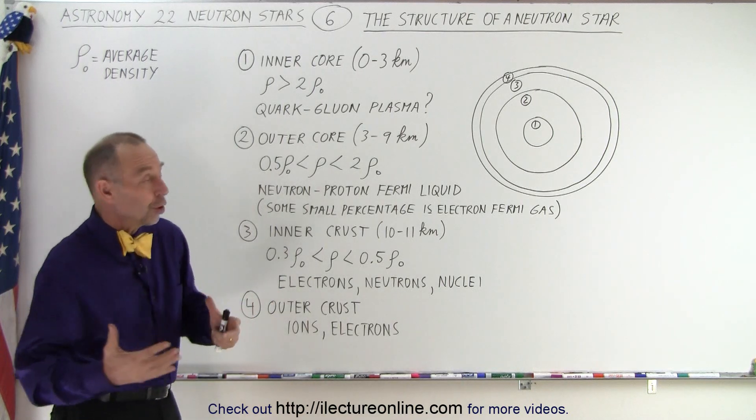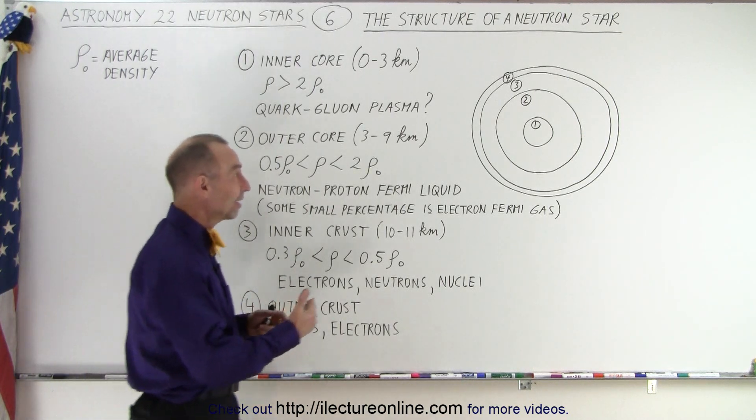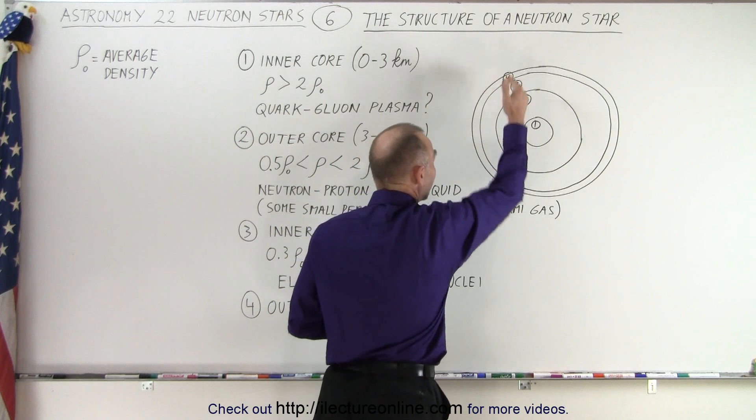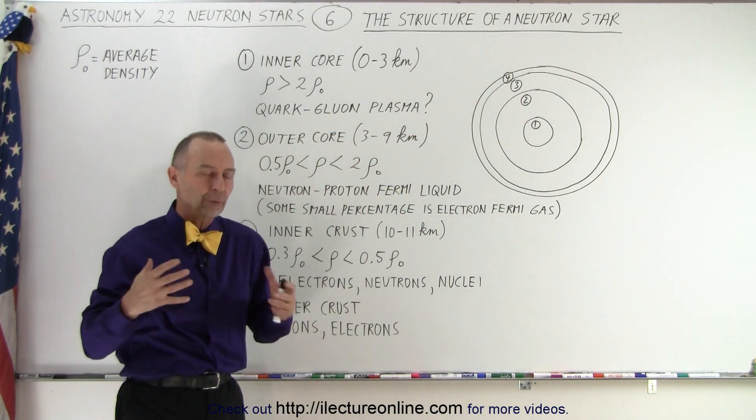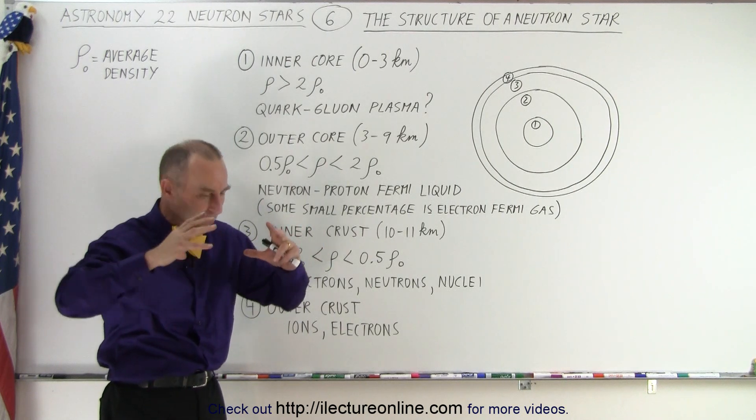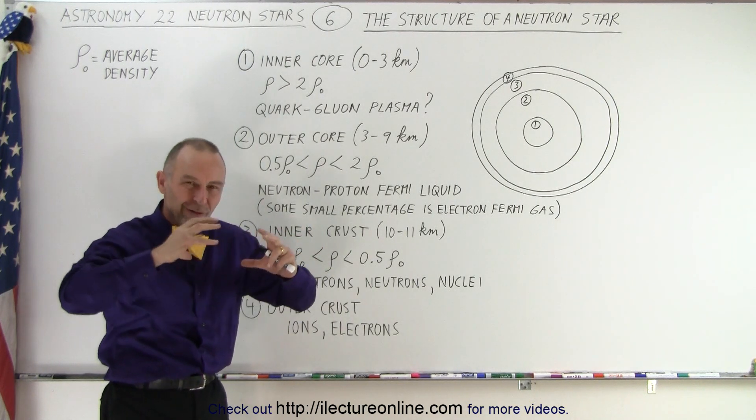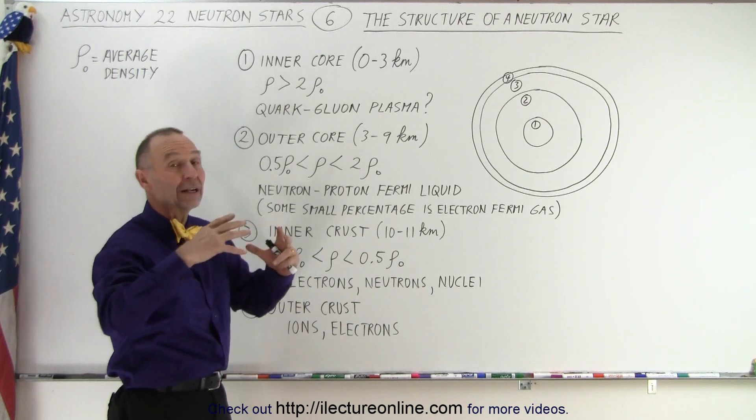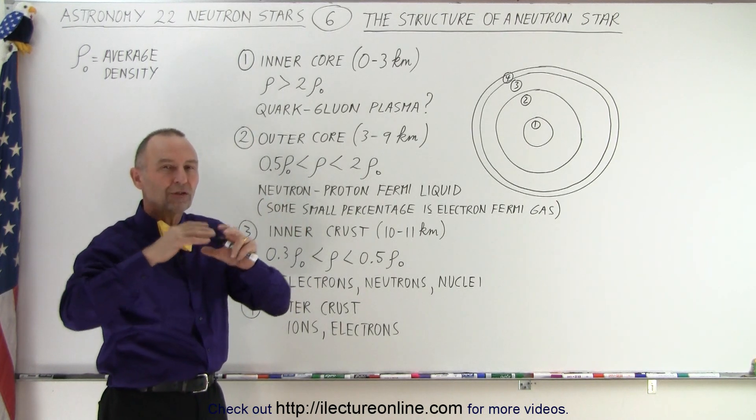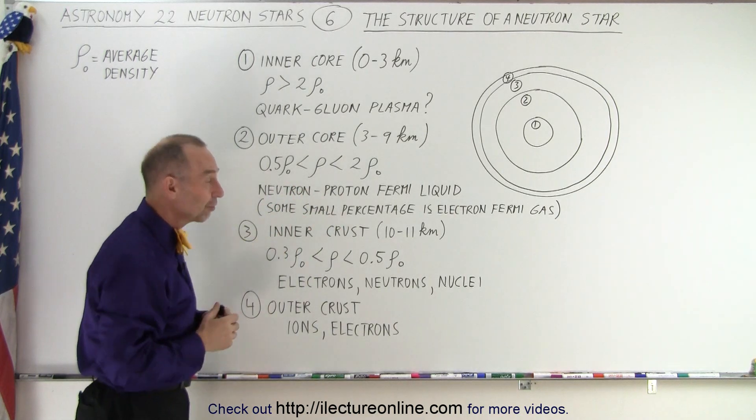What we definitely do know is that the pressure inside is far greater than it is towards the edge of the neutron star, so that the density therefore is also far greater. In other words, the nuclear particles, the neutrons and protons, are pushed to their very limit of how close they can be towards the center, and they're not nearly as tightly packed towards the edge of the neutron star.